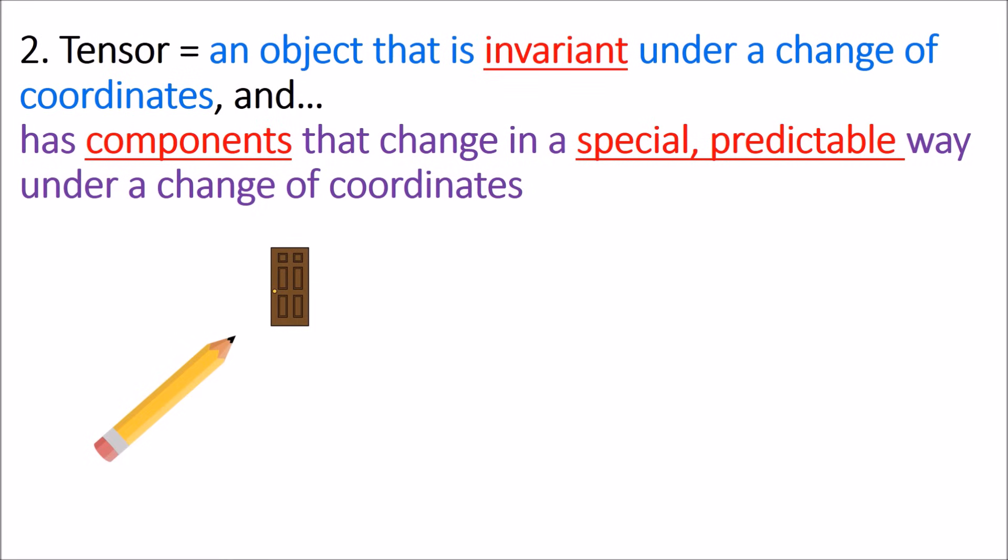There are a few things that we can say about this pencil that are just facts, and they don't depend on any coordinate system. For example, the length of the pencil. The length won't depend on our choice of coordinate system. The length is an intrinsic or invariant quantity. Also, this pencil is pointing toward the door, and that's just a fact. It doesn't depend on what coordinate system we use. The pencil's orientation is intrinsic or invariant under the choice of coordinate system.